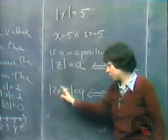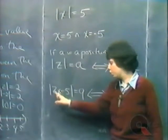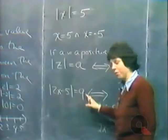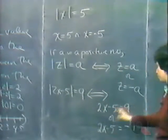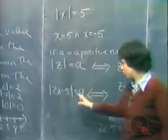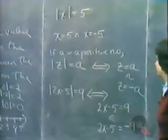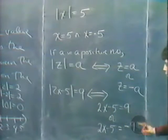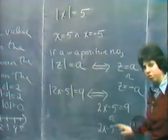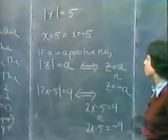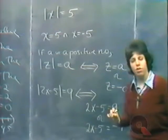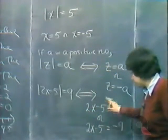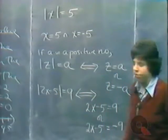Geometrically, 2X minus 5 is some number, and we want the distance between 2X minus 5 and 0 to be 9. So 2X minus 5 could be plus 9 or minus 9 — it has to be 9 units away from 0 on either side. We replace this absolute value equation by these two first-degree equations, solve each one separately, and get two possible answers. It's a very good idea to check your solutions in absolute value equations because it is possible a solution doesn't check out.